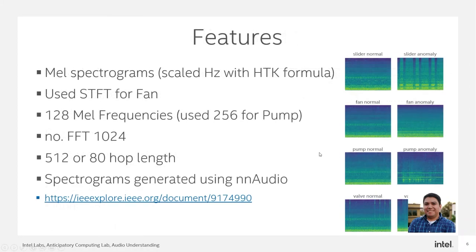Like the baseline system, we use mel spectrograms as a feature. However, we do not apply the logarithm — we simply scale the frequency axis using the HTK formula. For fan, we do not use a mel spectrogram; we use a short-time Fourier transform. For the mel spectrogram, we use 128 mel frequency bins, except for pump, for which we use 256. The FFT window size used is 1024, and the hop length we use is 80 for half of the machines and 512 for the other half. We use the PyTorch package and an audio library to generate the spectrograms on the fly.